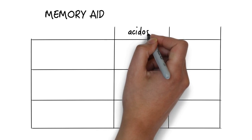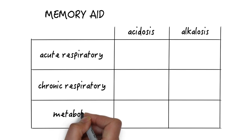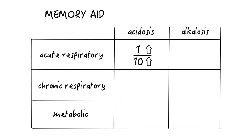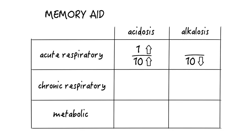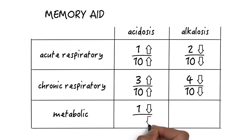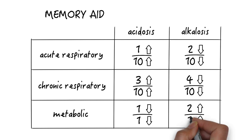Here's a memory aid to help remember what we've just learned. On the left side we write down acidosis and on the right side alkalosis. Then we have acute respiratory problems, chronic respiratory problems, and metabolic problems. In acute respiratory acidosis, for every 10-unit increase in pCO2 bicarb goes up by one unit. In acute respiratory alkalosis, for every 10-unit decrease in pCO2 bicarb goes down by two units. In chronic respiratory acidosis, for every 10-unit increase in pCO2 bicarb goes up by three units. In chronic respiratory alkalosis, for every 10-unit decrease in pCO2 bicarb goes down by four units. For metabolic acidosis, for every one-unit decrease in bicarb pCO2 goes down by one unit. For metabolic alkalosis, for every two-unit increase in bicarb pCO2 goes up by one unit.